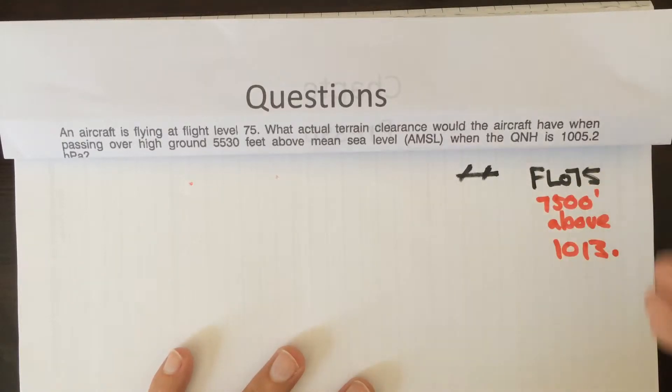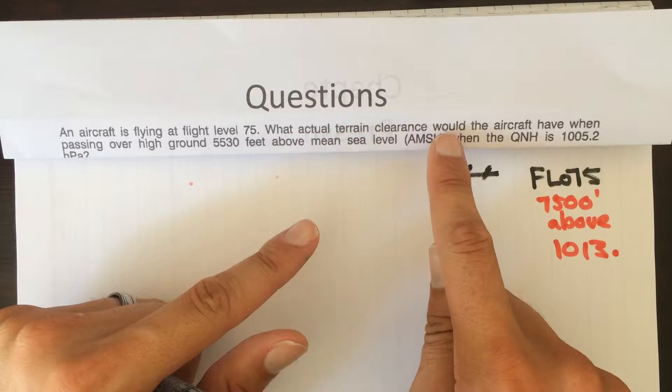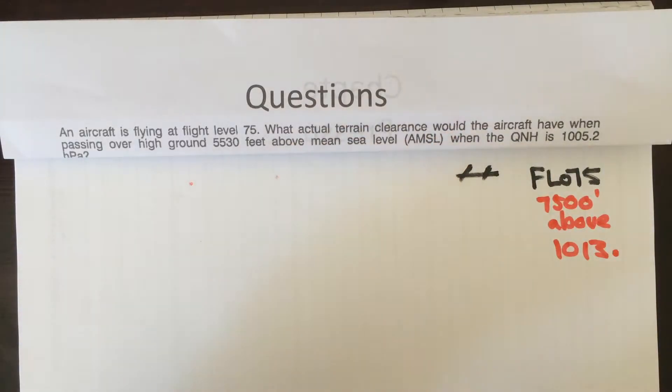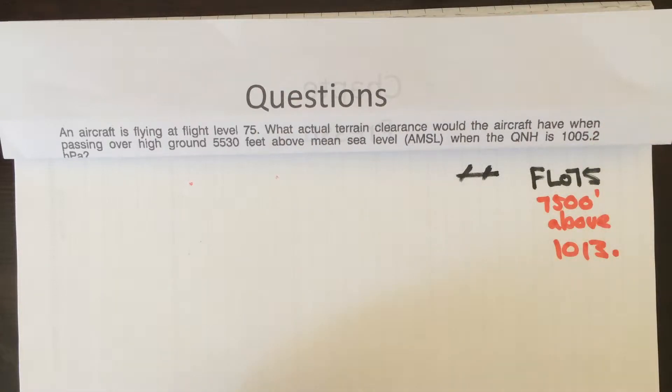We're above standard. So if the aircraft is at seven thousand five hundred, I really need a little bit more information before we can actually try and solve the question. The question is asking what is the actual terrain clearance that the aircraft would have when passing over high ground of five thousand five hundred and thirty feet above mean sea level when the QNH is one zero zero five point two.